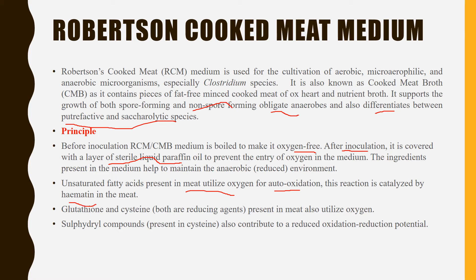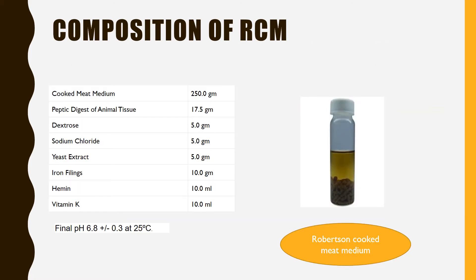Unsaturated fatty acids present in meat utilize oxygen for auto-oxidation, and this reaction is catalyzed by hematine in the meat. There is also glutathione and cysteine — both are reducing agents present in meat — which also utilize oxygen, so there can be CO2 only. Sulfhydryl compounds present in cysteine also contribute to reduce the oxidation-reduction potential.